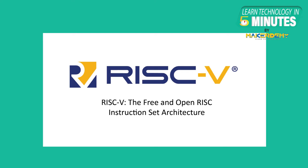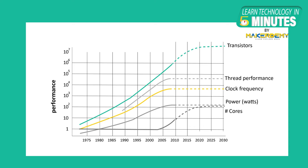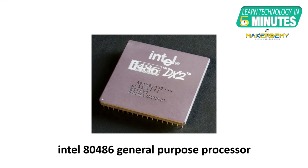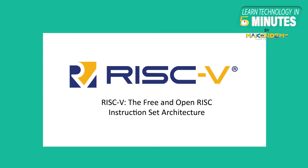RISC-V is an open standard instruction set architecture based on established reduced instruction set principles. It has been quite a while since Moore's law has offered the same kind of benefits as in the past. Moore's law implies that computers, mobile phones, and computing power will all become smaller, faster, and cheaper as transistors on integrated circuits become more efficient. A general purpose processor is no longer used for the biggest innovations. Unlike many other ISA designs, RISC-V is provided under open source licenses that do not require any fees to use.